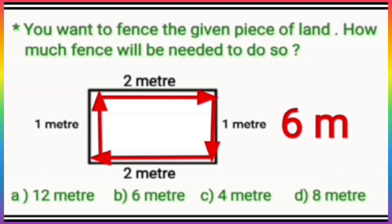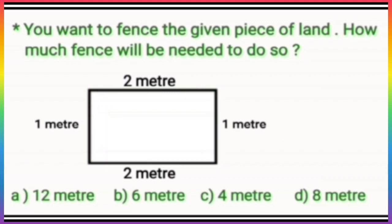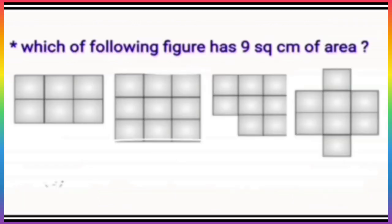Starting from option A: is it 12 meters? No. Option B: 6 meters? Yes, this is the correct one, because by adding all the sides we get 6 meters. Here is the next question: which of the figures has 9 square centimeters of area? Children, it's very easy to find the area from the given squares. We can find the area by counting the squares.